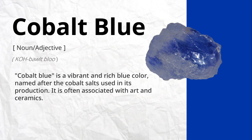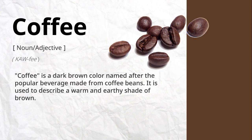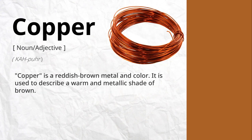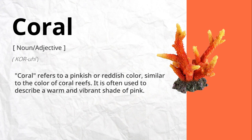It is often associated with art and ceramics. Coffee is a dark brown color named after the popular beverage made from coffee beans. It is used to describe a warm and earthy shade of brown. Copper is a reddish-brown metal and color, used to describe a warm and metallic shade of brown. Coral refers to a pinkish or reddish color similar to the color of coral reefs. It is often used to describe a warm and vibrant shade of pink.